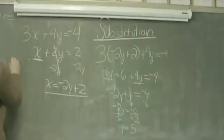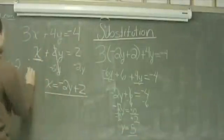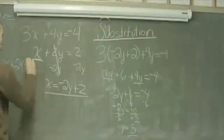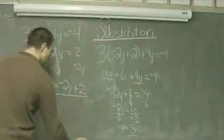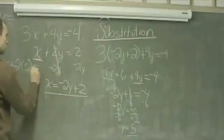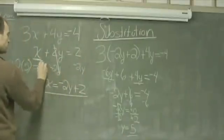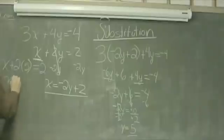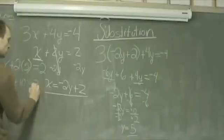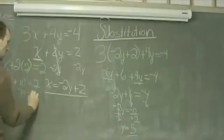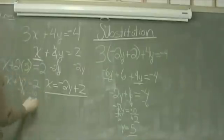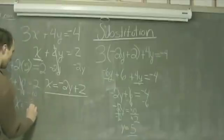I have x plus 2 times y, which is 5, so x plus 2 times 5, or 10, equals 2. Subtracting 10 from both sides, the 10s cancel, and I find that x equals negative 8.